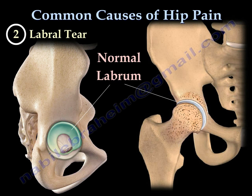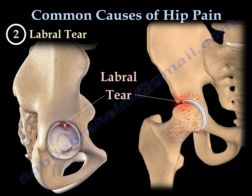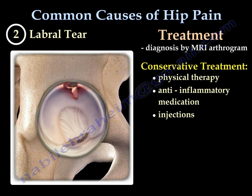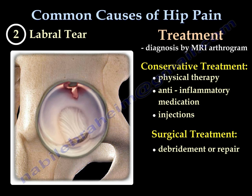The second condition is labral tear, usually diagnosed by an MRI arthrogram. Treatment is done with therapy, medication, and injection. Surgery is the best option and can be done by debridement or repair of the lesion, usually arthroscopically.